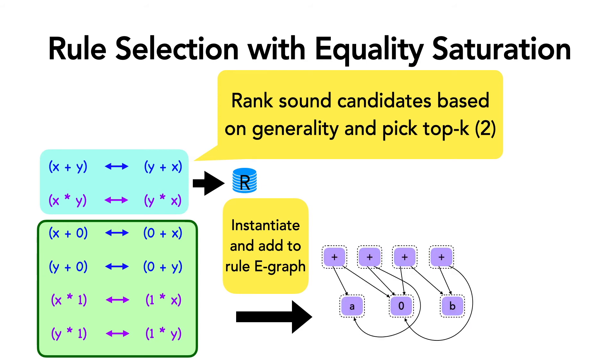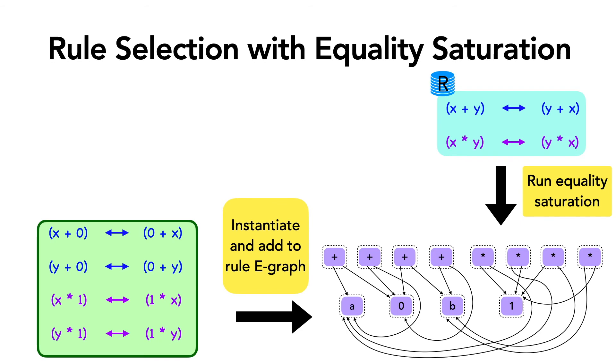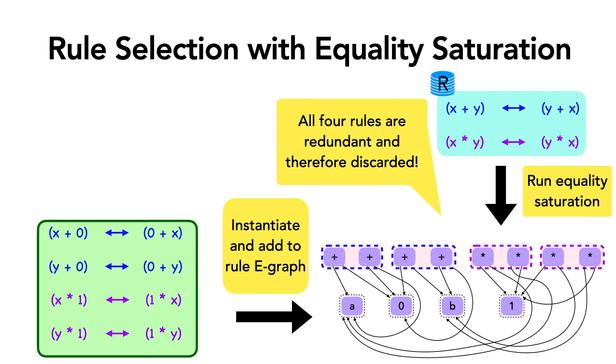For the rest of the candidates, Ruler will instantiate them and add them to a new e-graph that we call the rule e-graph. So here we can see the rule e-graph made with the left-hand sides and right-hand sides of the rest of the candidates in the candidate pool. Then, Ruler will use the rules that it has learned so far to run equality saturation over this rule e-graph. And what this does is it lets Ruler decide if any of the rest of the candidates are actually derivable from the rules already in the rule set.